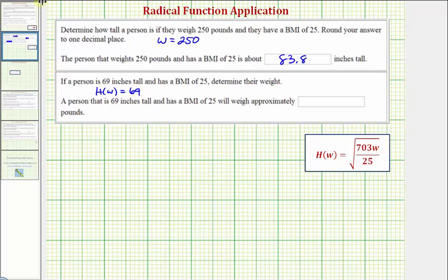We want to solve the equation 69 equals the square root of 703 W divided by 25. To solve this, we want to undo the square root and then solve for W. Since the square root has an index of two, if we square the square root it'll simplify perfectly, so we'll square both sides of the equation.